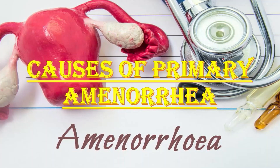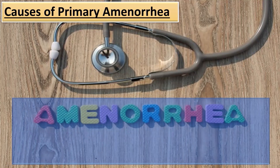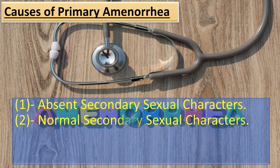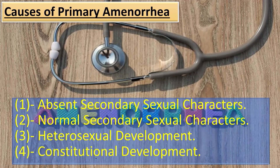For the primary amenorrhea topic, I would recommend Arshad Chauhan's book of Obstetrics and Gynecology. To understand the main causes, let us look at four groups of disorders: first, absent secondary sexual characteristics; second, normal secondary sexual characteristics; third, heterosexual development; and fourth, constitutional development.